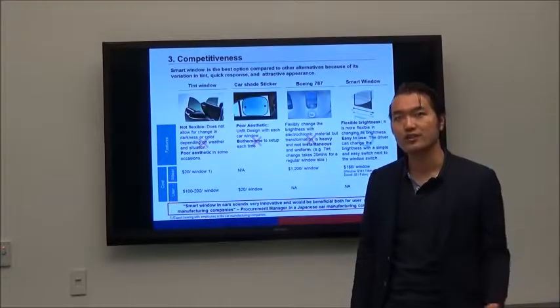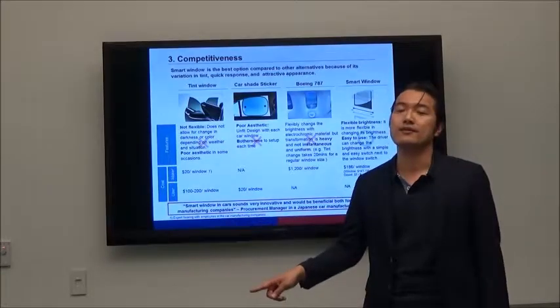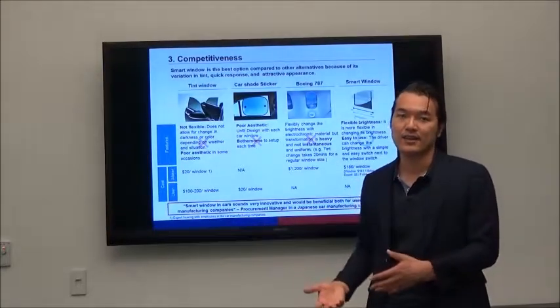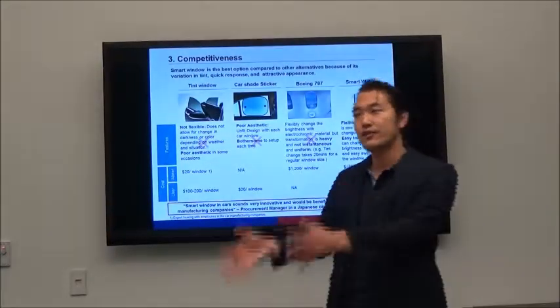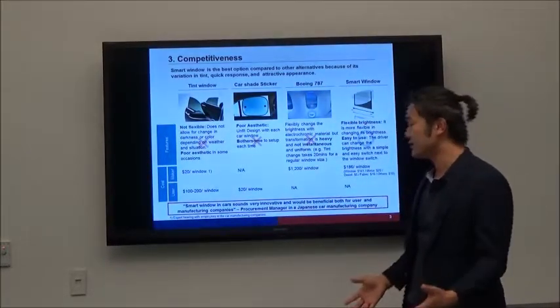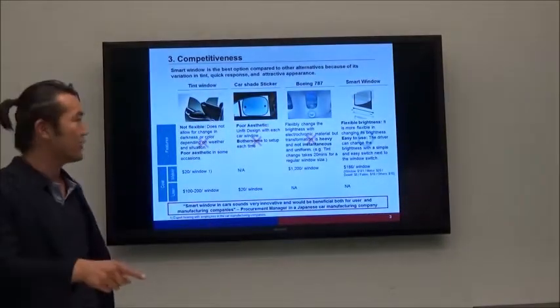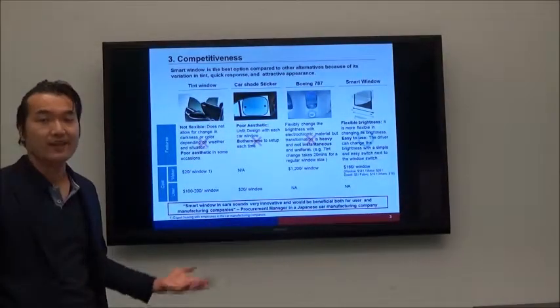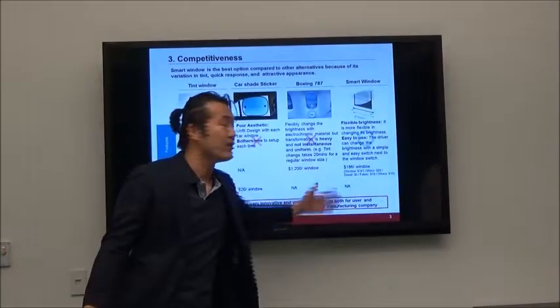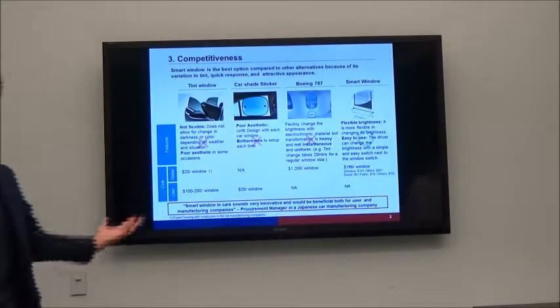And Boeing 787, this is great. This is a new technology and customers can change the tint with the button. But it's expensive and heavy, too heavy to put in the car. So a smart window is the best. It's flexible to change the brightness and also easy to use with the button. And also it looks good, and it's cost-effective, $186 per window. So Masato, please talk about the business plan.